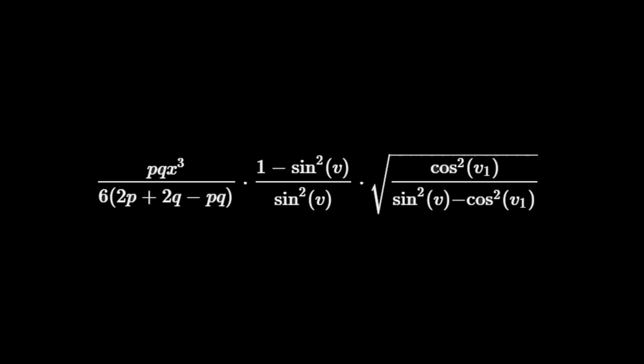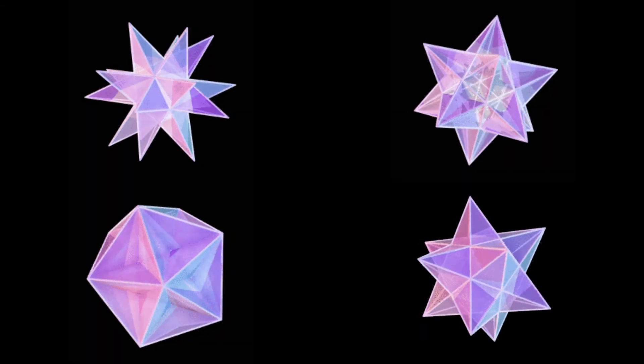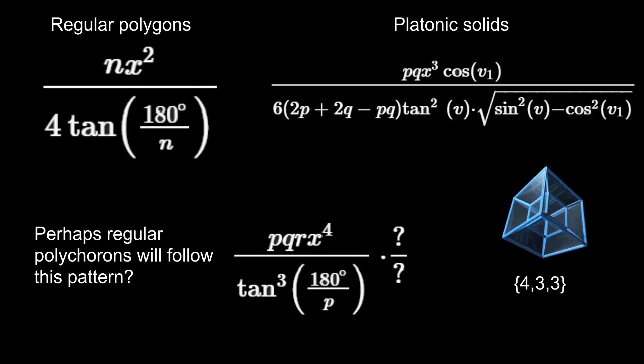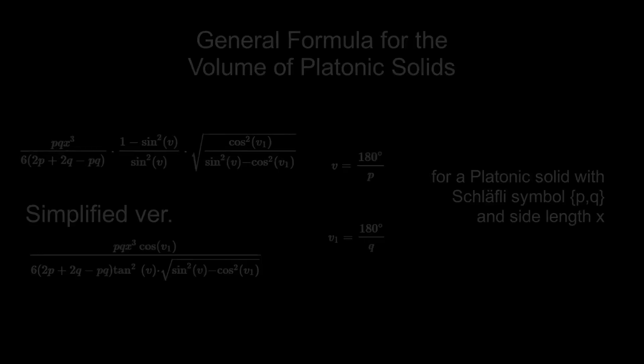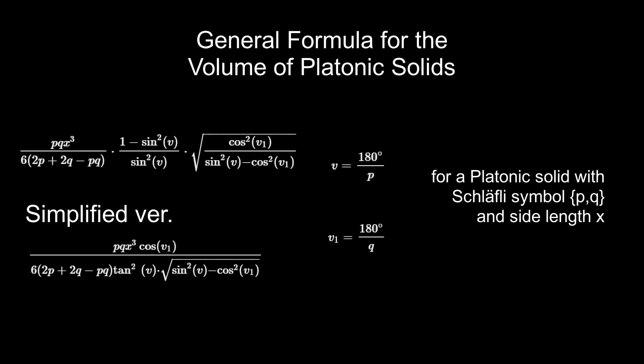So there you have it — the general formula for the volume of platonic solids. It may only work for 5 objects, but maybe someone could modify it so it works for regular star polyhedra as well. Or maybe it will help us find the general formula for the hypervolume of regular 4D objects. Or maybe there's a better formula somewhere, hidden deep in the well of knowledge. For now, I'll be sticking to this formula, and I hope you can find a use for it too.